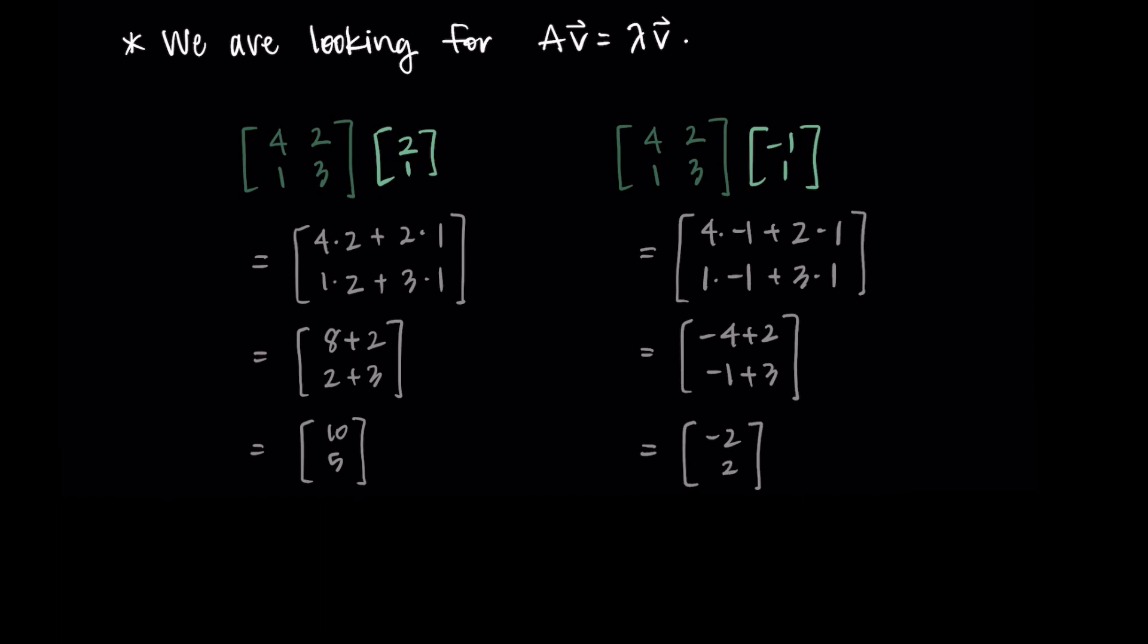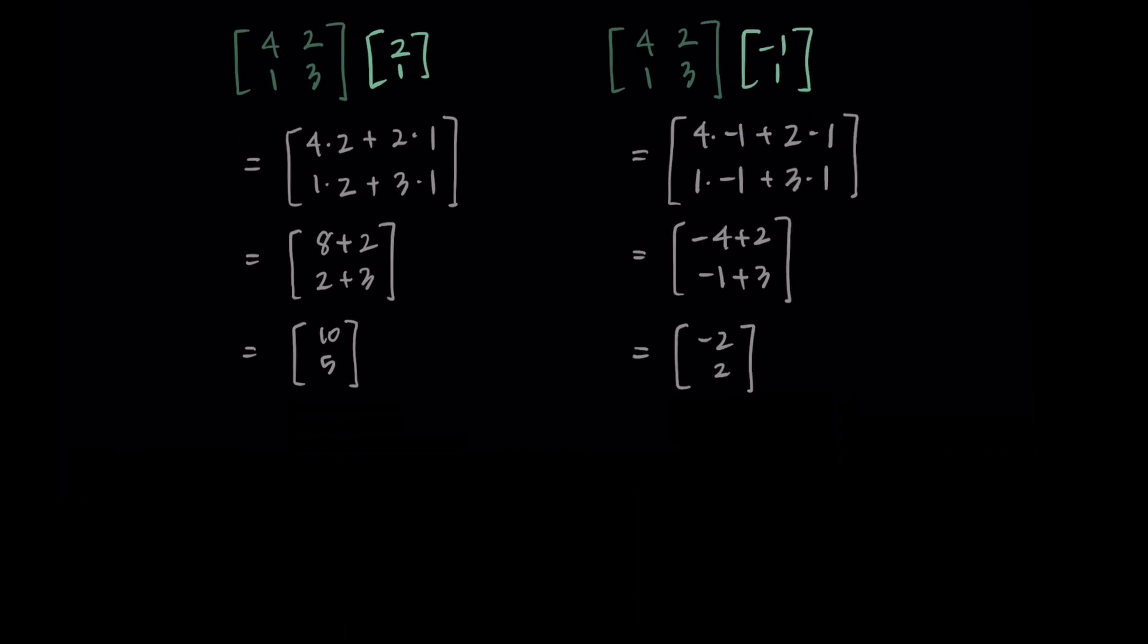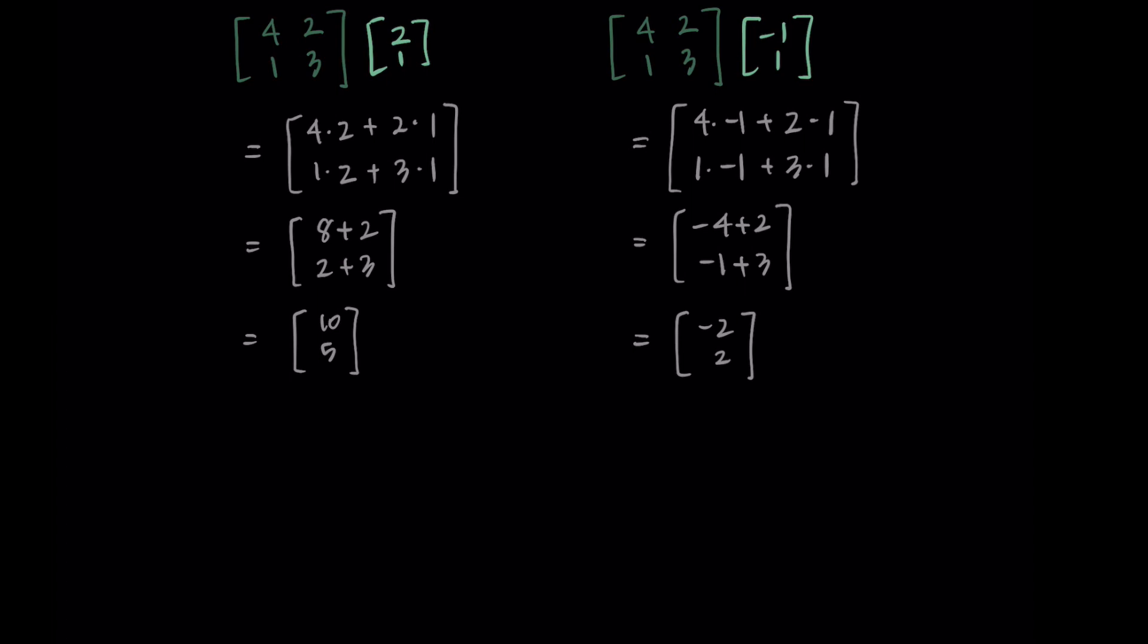We have our resulting vectors. We've done A times v. Now we want to see, is this equal to a scalar times our vector that we started with? We're looking, is the vector [10, 5] equal to lambda times our original vector [2, 1] for some lambda? Then for the second eigenvector, is [-2, 2] equal to lambda times the original vector [-1, 1]?